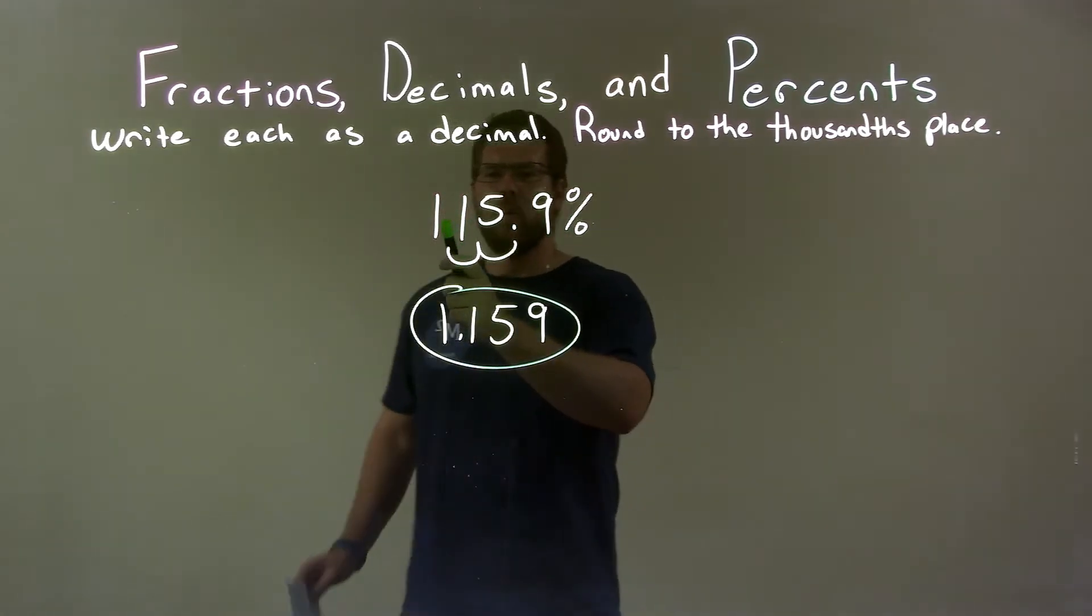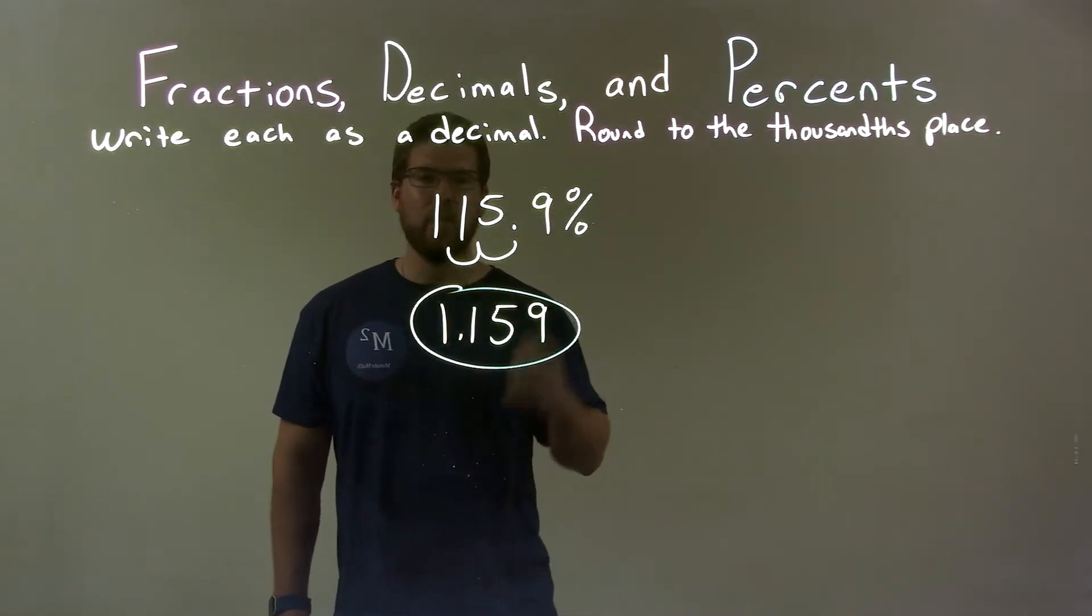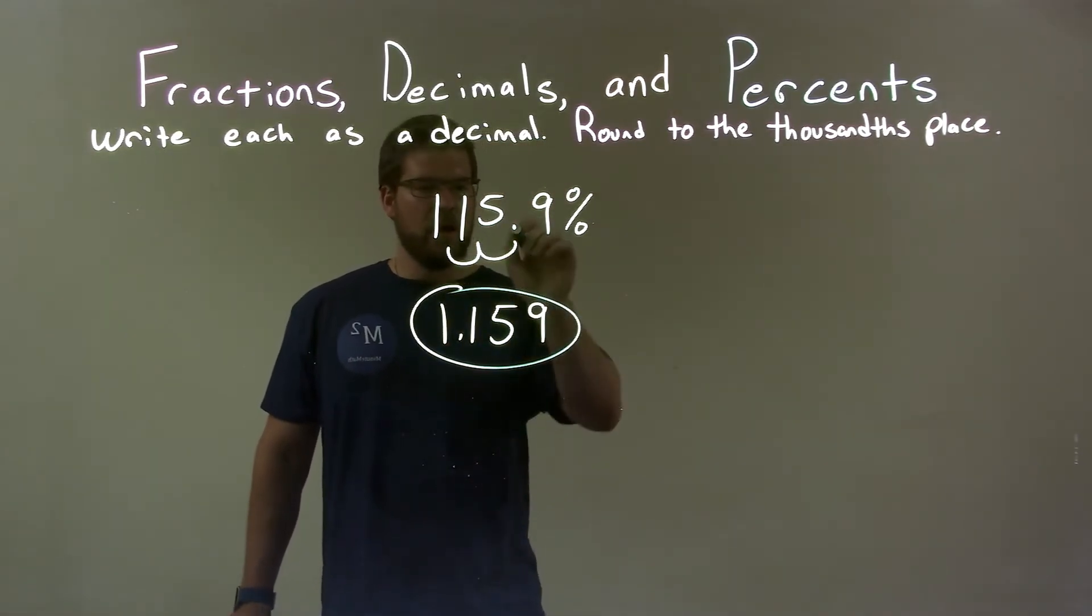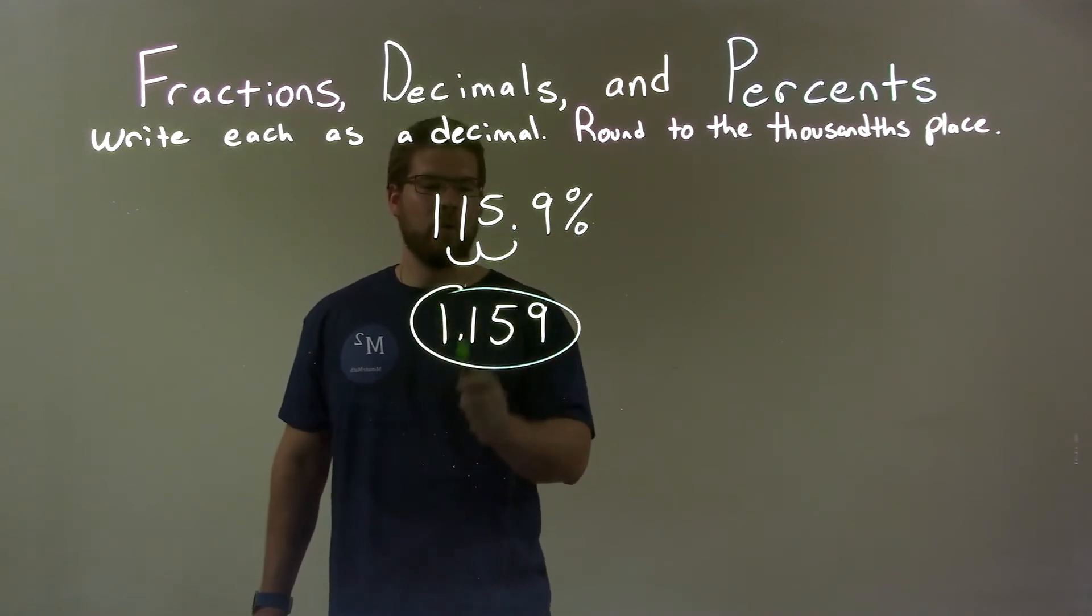So, quick recap. We're given 115.9%, and we have to write that as a decimal. The decimal place moves two spots to the left, giving us 1.159, and that's in the thousandths place. So, we're done. And so, our final answer is just 1.159.